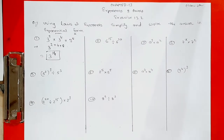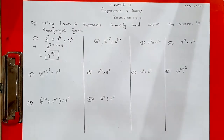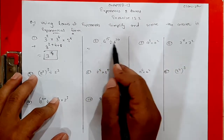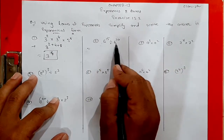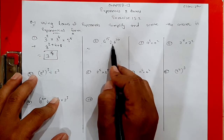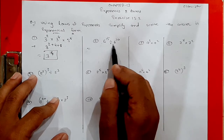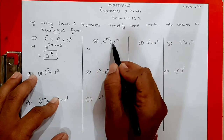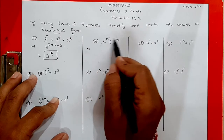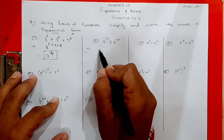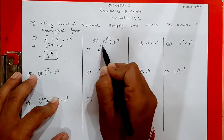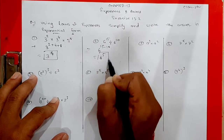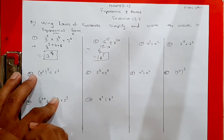Second question: 6 raised to 15 divided by 6 raised to 10. Both bases are the same, sign is division — apply Rule 2 and subtract the powers. 15 minus 10 equals 5, so the answer is 6 raised to 5.